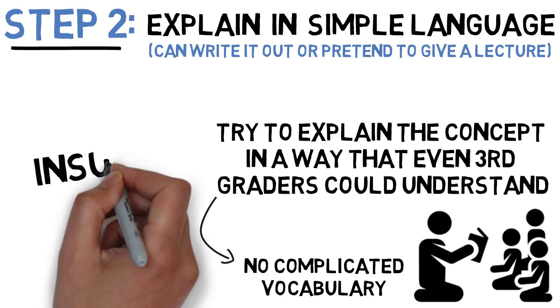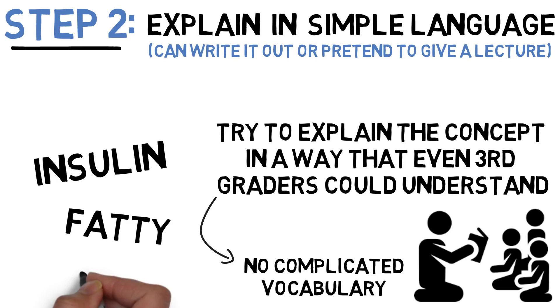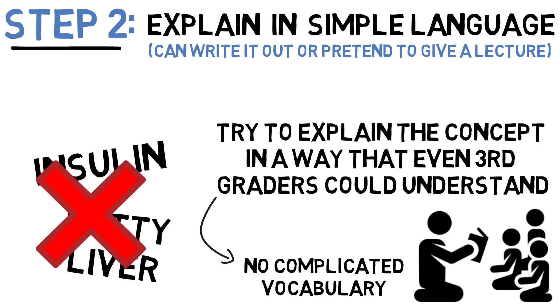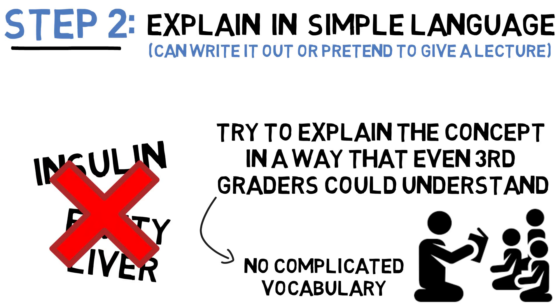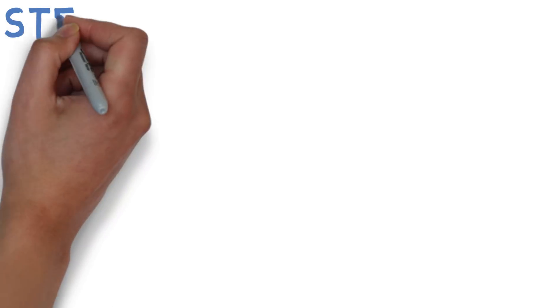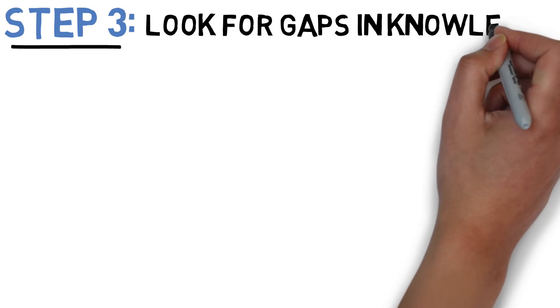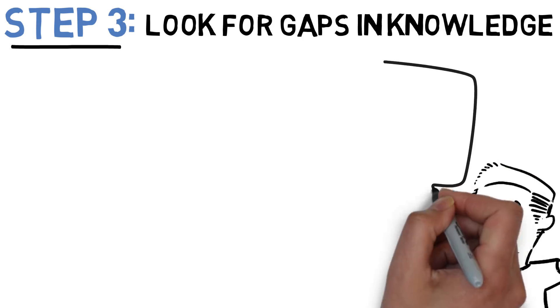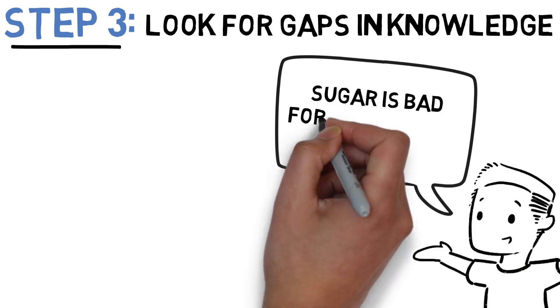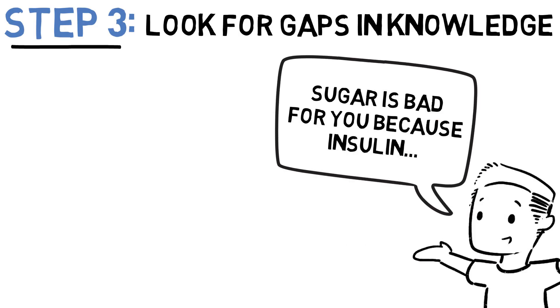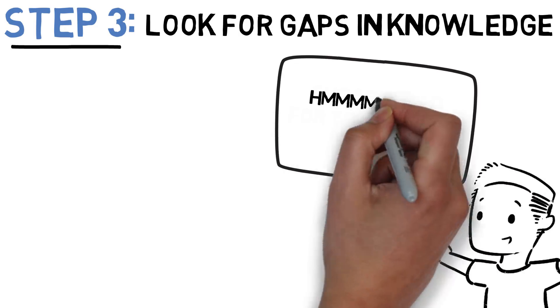If we use our example about why sugar is bad, we won't be able to use words like insulin or fatty liver because third graders don't know what that is. The third step is to determine a gap in your knowledge. So during your explanation to your imaginary class of third graders, you're going to have moments where you realize you don't really understand something. Let's say you can't break down the word insulin for your class. This means you don't really know what it is.